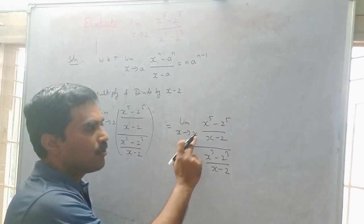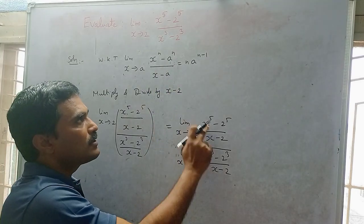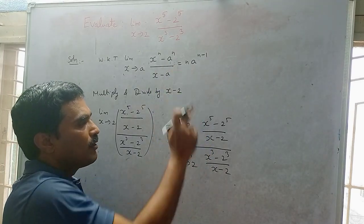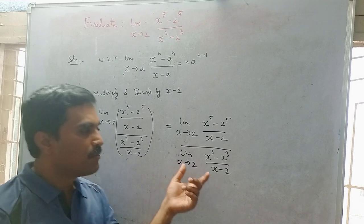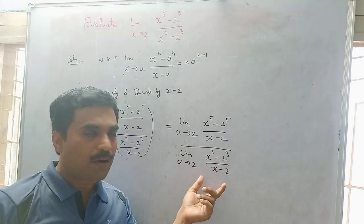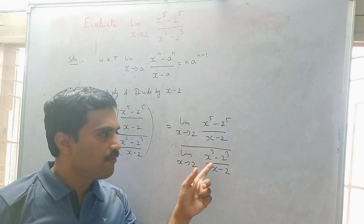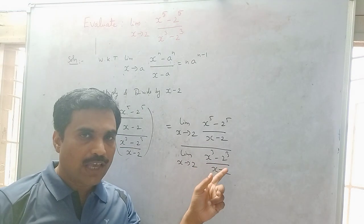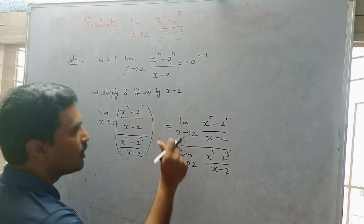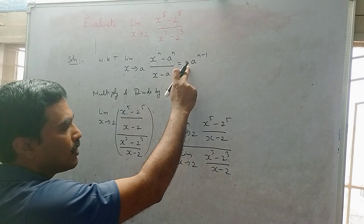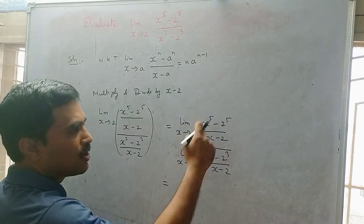The numerator is of the form of our formula where n equals 5 and a equals 2. Similarly you can apply the same formula to the denominator where n equals 3 and a equals 2. Applying the formula gives n times a^(n-1) for each part.